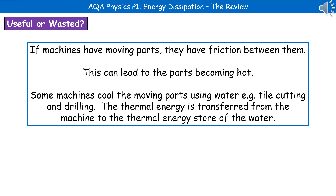In many machines we have in our everyday lives, there are quite a few moving parts, and if a machine has moving parts, then we will have friction between them. The problem is that those moving parts, as a result of friction, can become quite hot. So in the design of certain machines, we find ways to cool them down. Some machines do this by using water across those moving parts — good examples are tile cutters and certain drills. The water transfers thermal energy from the machine to the thermal energy store of the water, which can then be dissipated to the surroundings.